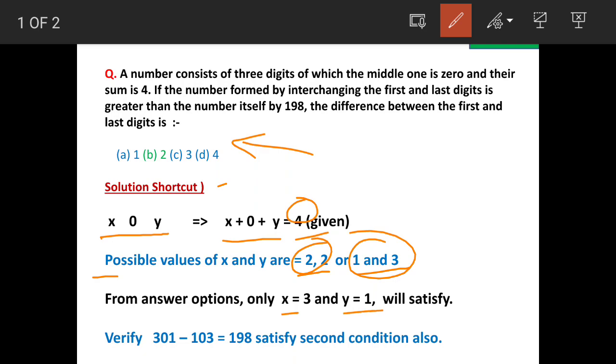But if you try out your answer with 2 and 2, none of the option will actually be satisfied. So the answer is 1 and 3 or we can say x will be 3 and y is equal to 1.